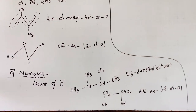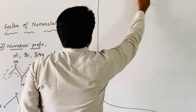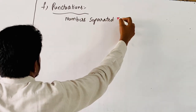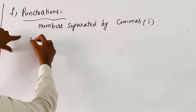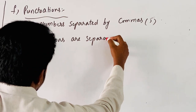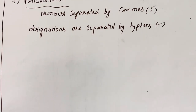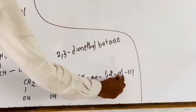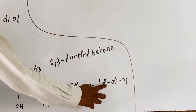After the discussion of numbers, the next topic is punctuations. Numbers are separated by commas. Designations are separated by hyphens. In the previous example, one comma two — numbering of carbons — are separated by commas, and the designations such as 'di', the numerical prefix, and the secondary suffix are all separated by hyphens.